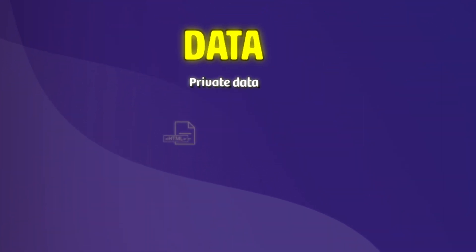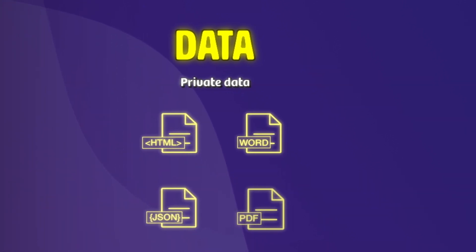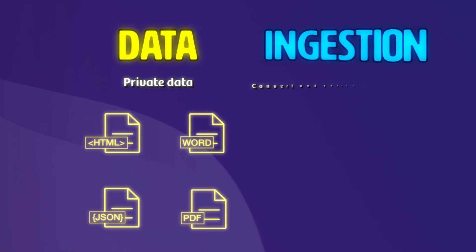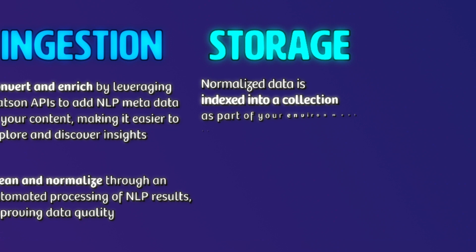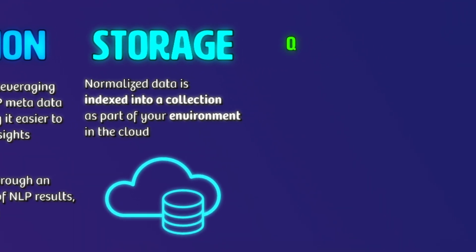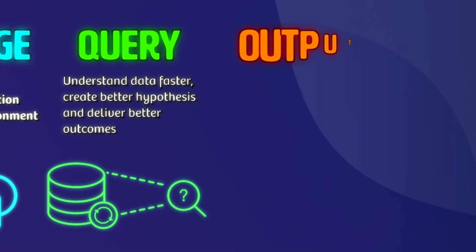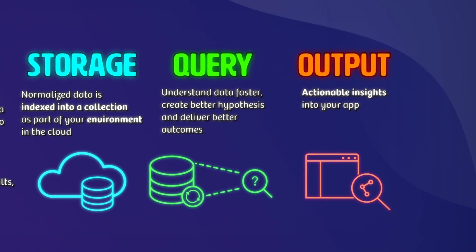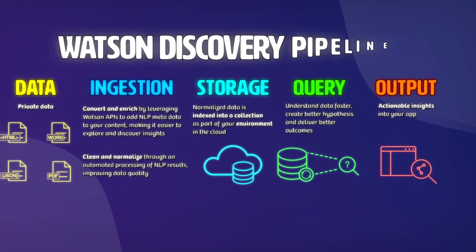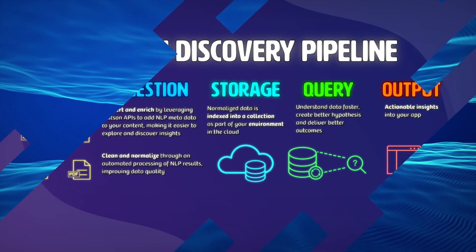The way the pipeline looks is that we first give Discovery our data set in whatever file format it's in. Then it will convert and enrich that data using several Watson APIs that use natural language processing to add metadata to the content, making it easily searchable as well. It will also clean and normalize the data. Once the data is normalized, it's indexed into a collection as part of our environment in the cloud. Then we can query the data to see if we get any actionable insights from the output we receive.